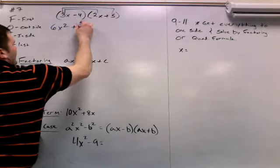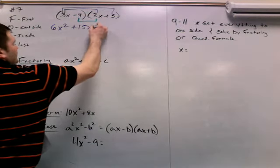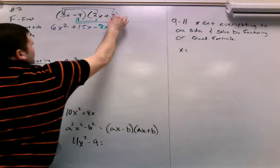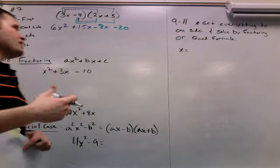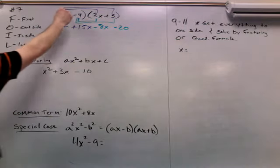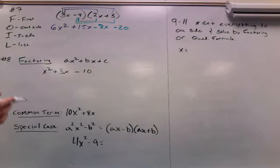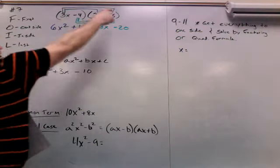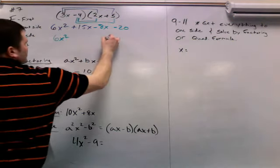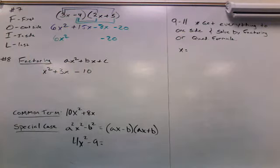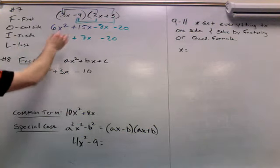Outer: 3x and the 5, so 3x times 5 is 15x. Inner: negative 4 and 2x, which gives me negative 8x. Last: negative 4 and 5, which gives me negative 20. The blue lines involve the 3x being distributed onto both terms, and the green lines involve the negative 4 being distributed onto both other terms — every term has to multiply every other term once. Now combining like terms: 6x squared drops down, negative 20 drops down, and 15x minus 8x is 7x. So our answer is 6x squared plus 7x minus 20.